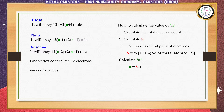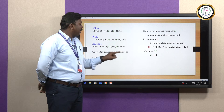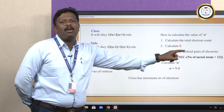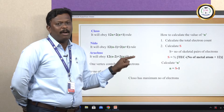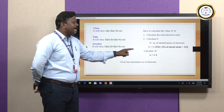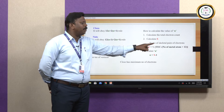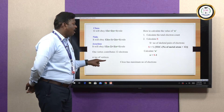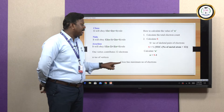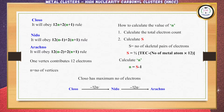To calculate n, the first step is to calculate the total electron count. The second step is to calculate S, the number of skeletal pairs of electrons. The formula for S is: S = (1/2) × (total electron count) − (number of metal atoms × 12). To calculate n, the formula is n = S − 1. Closo has the maximum number of electrons. The electron difference between Closo and Nido is 12 electrons, between Nido and Arachno is 12 electrons, and between Closo and Arachno is 24 electrons.